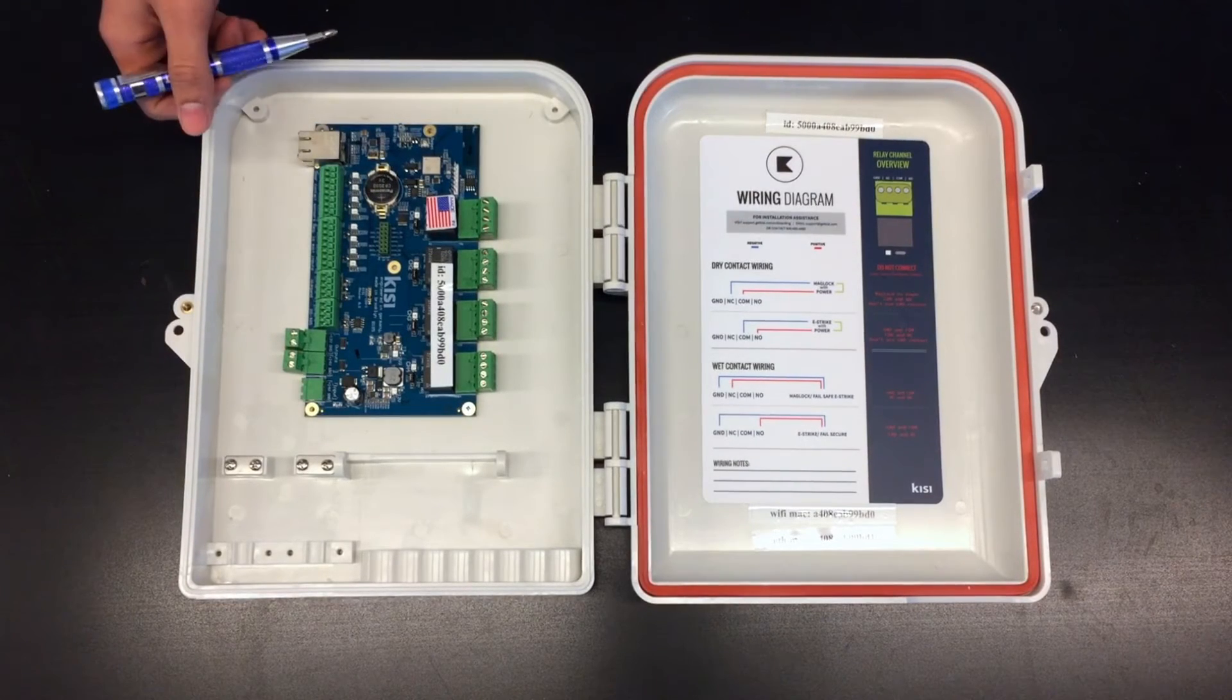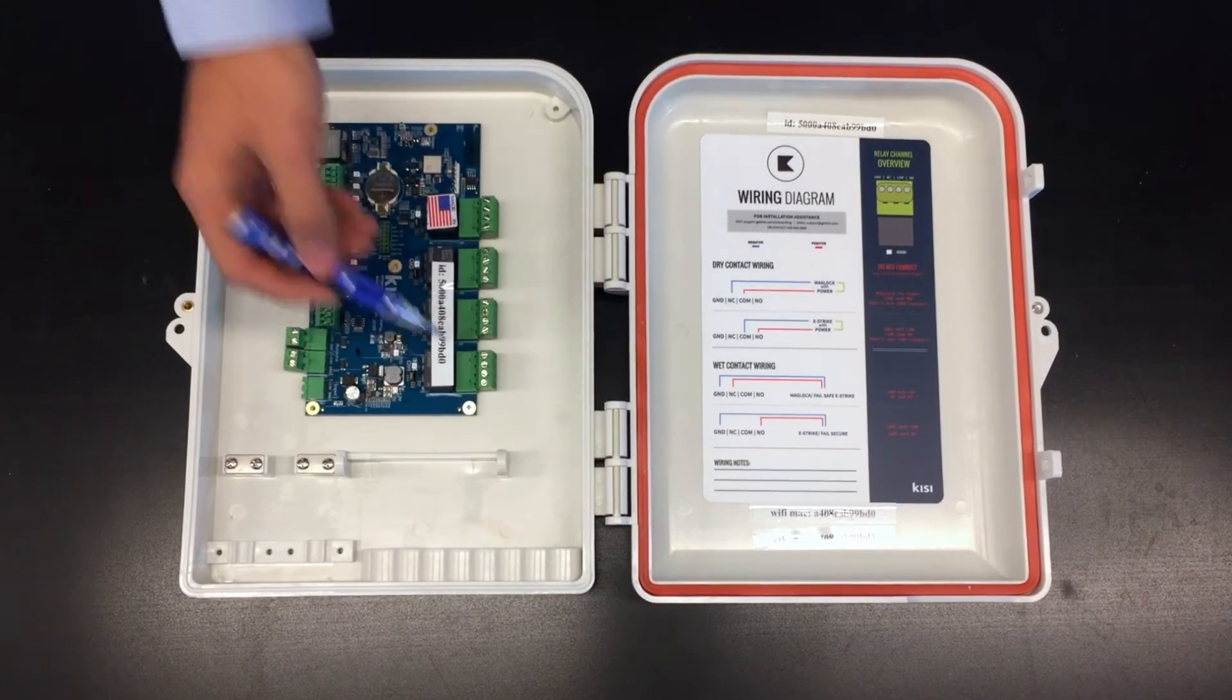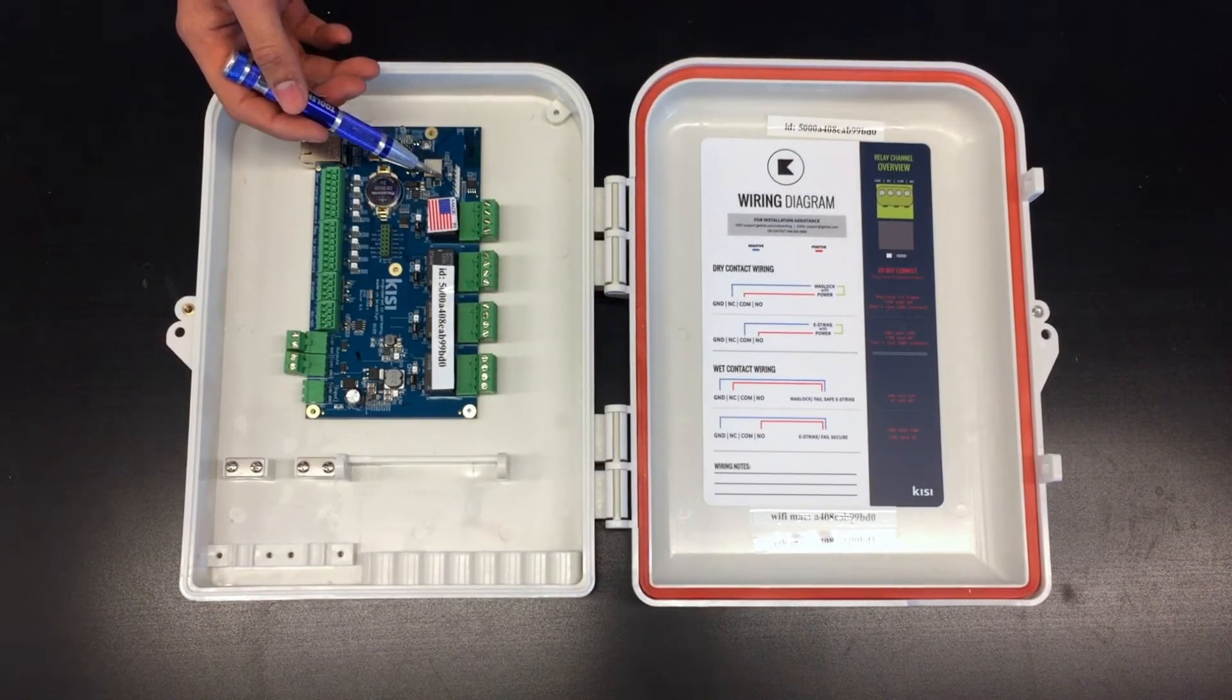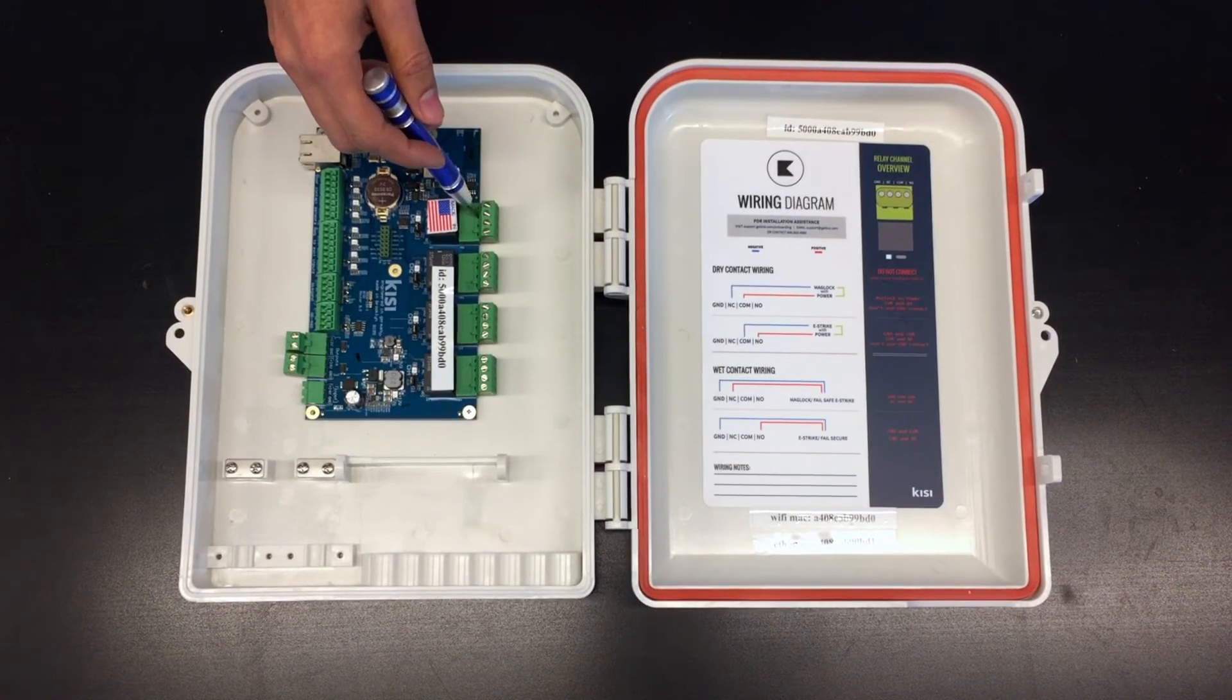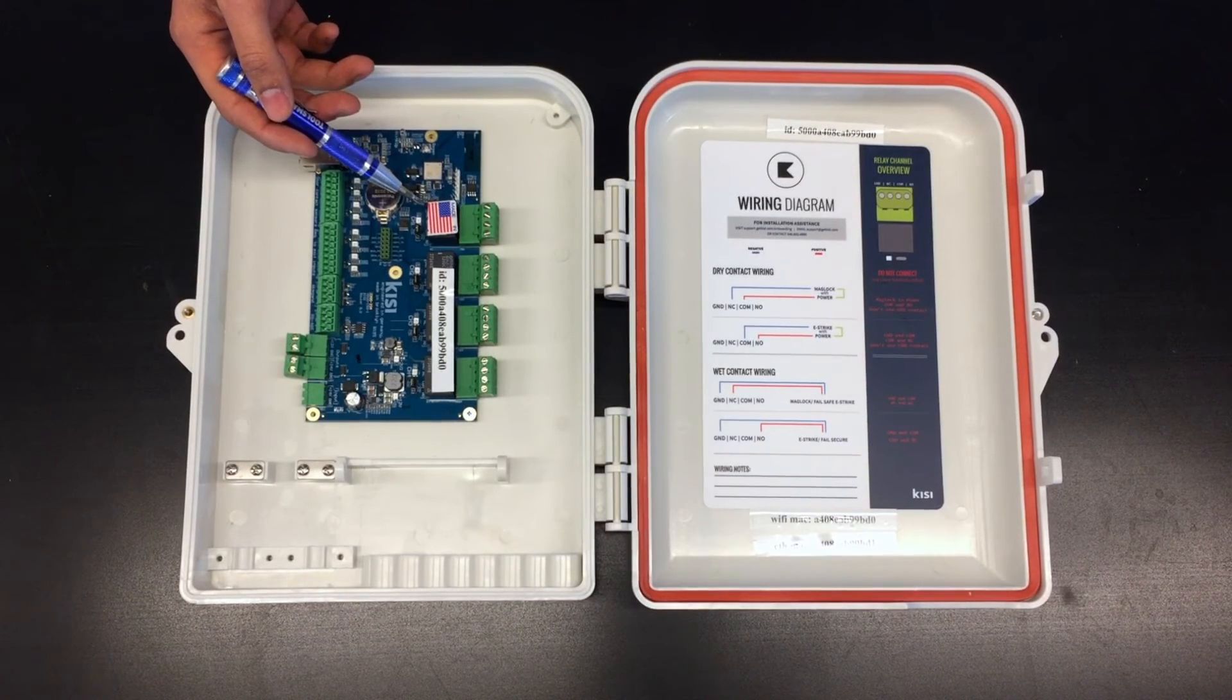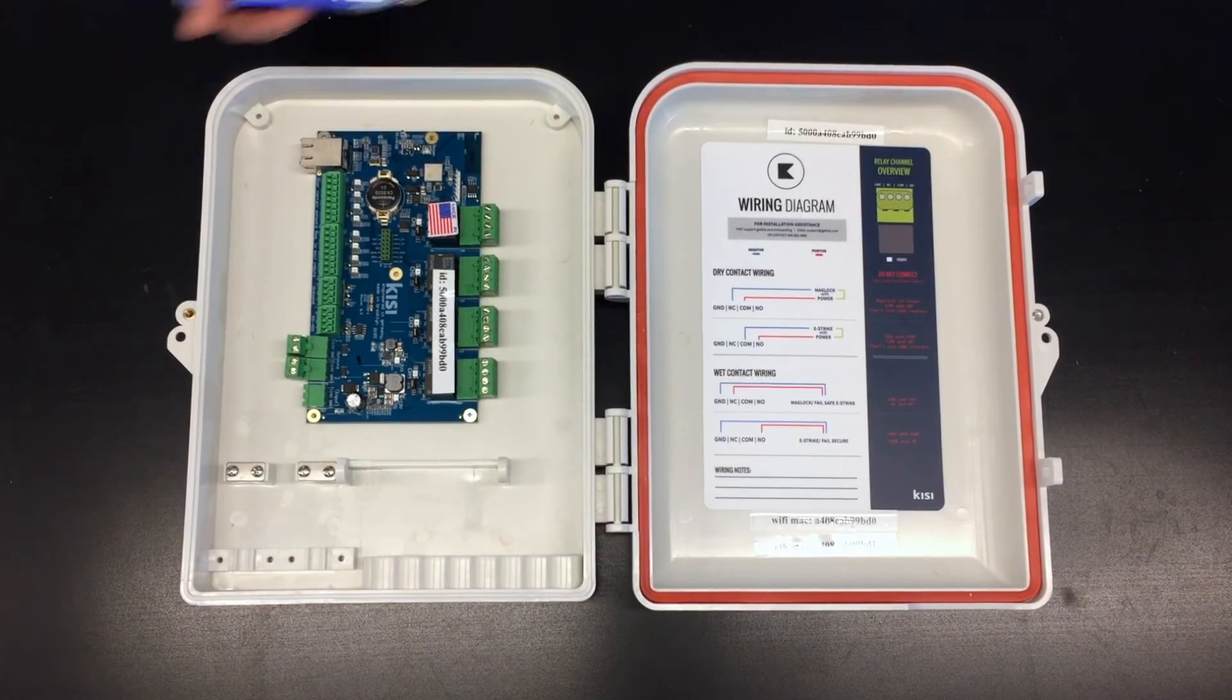One of the biggest changes to the board is the fact that we now offer wet relays. All four of these relays are capable of being configured as wet relays, which means that you no longer need an external power supply to power these. If you wanted to power a lock, for example, you can hook these up directly to the relays without needing an external power supply. The board is capable of providing 24 and 12 volts, which makes it pretty ideal, as that's pretty much what you need for most electronic locks nowadays and mag locks.